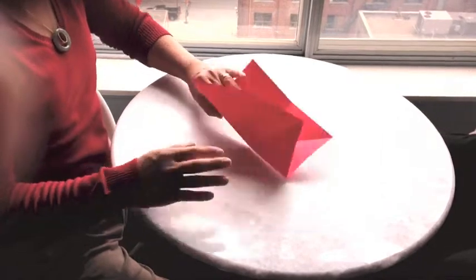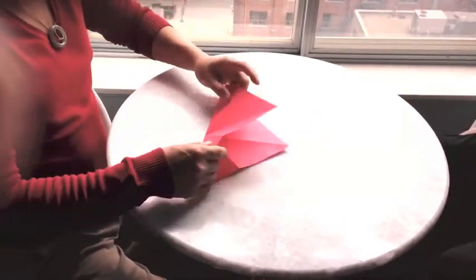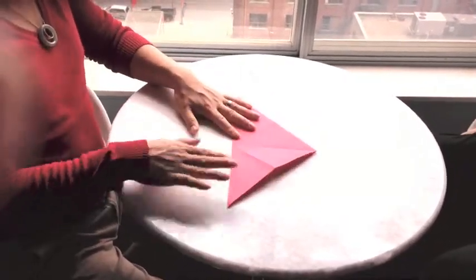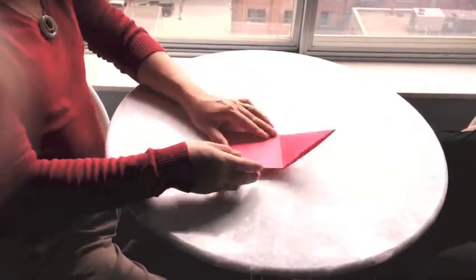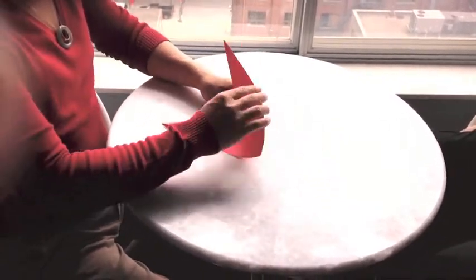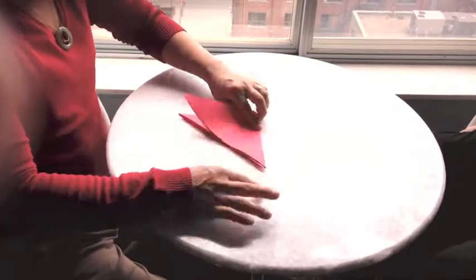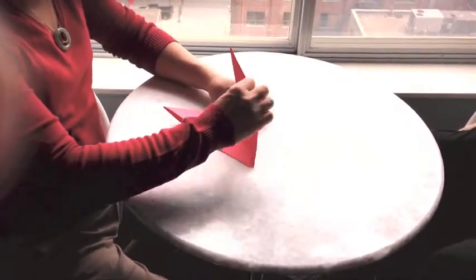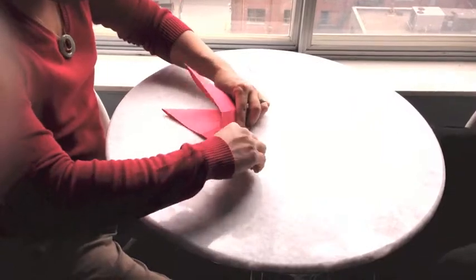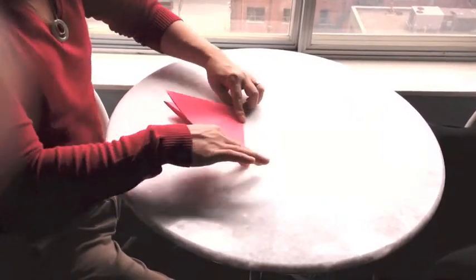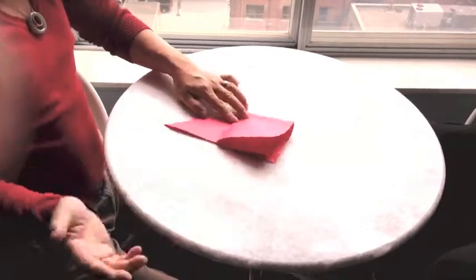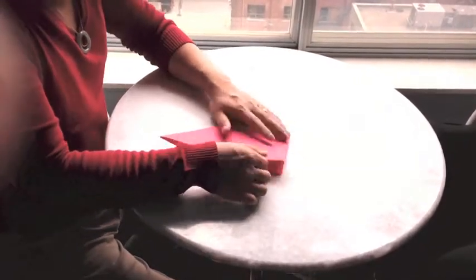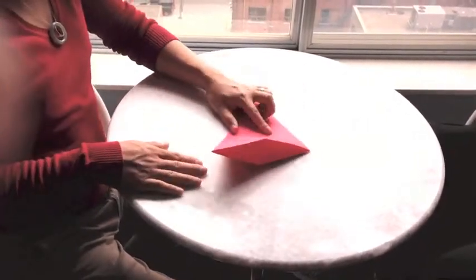So you reopen everything again, you fold this in a triangle. Now that you have the crease, you're going to open this, like so, so the triangle.